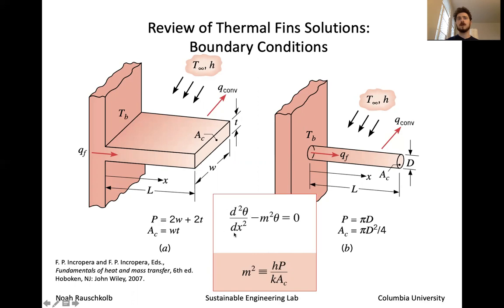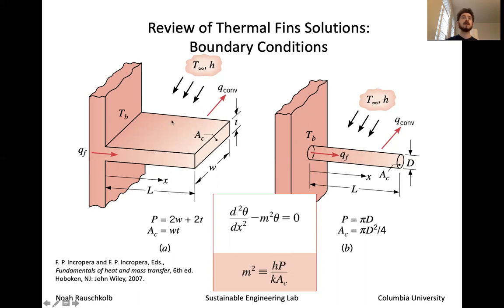The issue is you get to this ODE that has both a second derivative of theta and just a regular theta term. To recall, theta is essentially just delta T — the difference between the temperature at some point in the FIN, whether that's the base or somewhere along X, and the ambient temperature T-infinity. The m² term is simply H, the heat transfer coefficient, times the perimeter — which for a circular cross-section FIN is just 2πR or πD, and for a rectangular FIN it's twice the thickness plus twice the width.